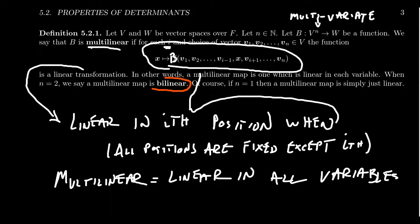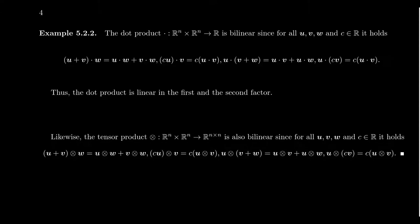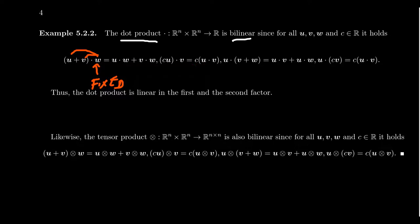We say a map is bilinear if it is multilinear with two variables. The dot product on R^n is an example of a bilinear map. For any vectors u, v, and w, with w fixed, by properties of the dot product we can distribute: (u + v)·w = u·w + v·w, so addition is preserved in the first coordinate. And c·u·v = c(u·v), so scalar multiplication is preserved. These tell us the dot product is linear in the first factor.